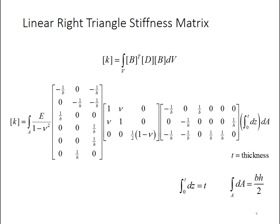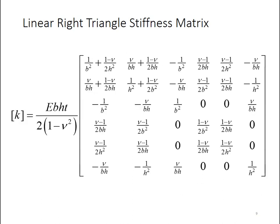So, here the integral from zero to T of DZ is just going to be T, the thickness of my element. So, that will remain as a constant here, assuming that I have constant thickness throughout the element. And then the integral of DA, remember nothing else in here, if you look, depends on X or Y. So, I can just resolve that integral right away. So, the integral over DA, I'm sorry, the integral over the cross-sectional area is BH over 2. And when we multiply those three matrices together, we get this unholy mess.